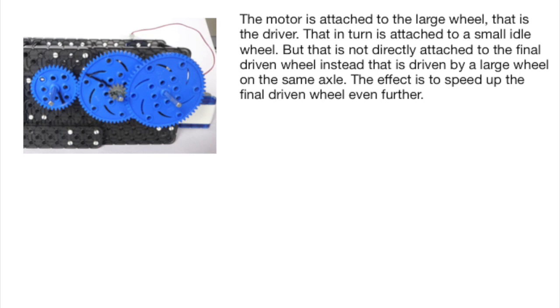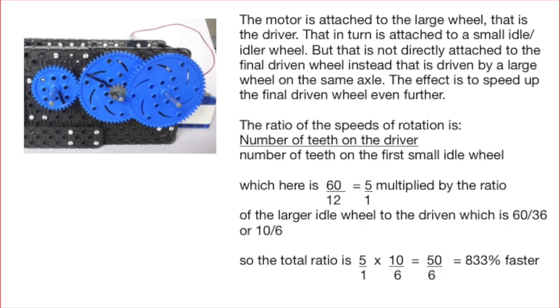So the large driver wheel is attached to a small idle or idler wheel which on the same axis is a second large idler wheel which drives the final driven wheel. The ratio of the number of teeth on the driver to the small idle wheel is 60 to 12 or 5 to 1.